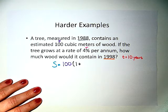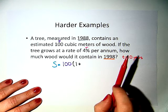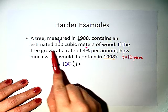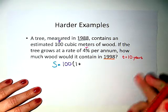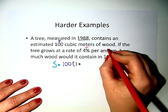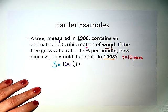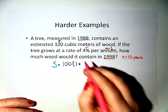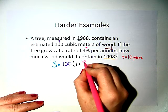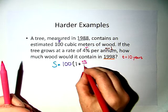Now, what would our n be per annum if the tree grows at a rate of 4% per annum? So it's not compounded quarterly, not compounded daily, but the annum would mean that m equals 1. So we're going to say 4% over 1.